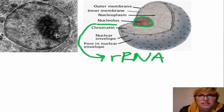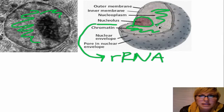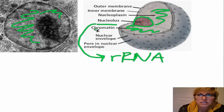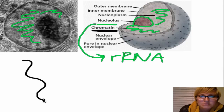I thought that the nucleus held the DNA. Well, all this gray matter in here is where DNA is stored. And it's stored in what we call chromatin. So when we think of DNA, we think of this nice double helix.